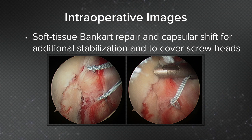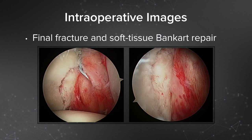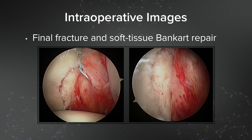You can see two racking stitch sutures placed to cover the screw heads. Here is the drilling of the pilot hole for the push locks. Here is the final fracture and soft tissue Bankart repair — it's an anatomic reduction with no screw head prominence, and the capsule and labrum have been shifted.